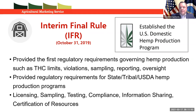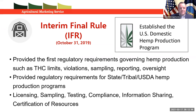Quickly following issuance of the 2018 Farm Bill, USDA published an interim final rule. This document was the first set of regulatory requirements governing all aspects of hemp production in the United States, particularly around concentration limits for THC, what to do if there is a violation, and requirements for sampling, testing, reporting, and general oversight for USDA and also for state and tribal governments.